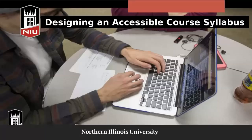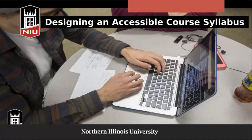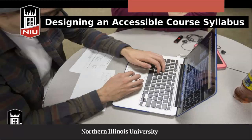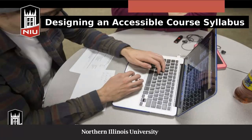Good morning and welcome to today's workshop on designing an accessible course syllabus. The course syllabus is an essential component of your course and should be precise, clear, and accessible. A syllabus is often the first means of communication between you and all of your students, so a well-designed accessible syllabus is very important and ideally follows universal design principles for learning, benefiting all students. In this workshop we're going to talk about some tools and strategies to help you create a well-organized and accessible course syllabus.